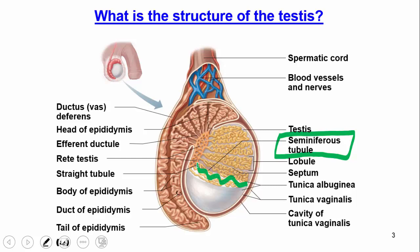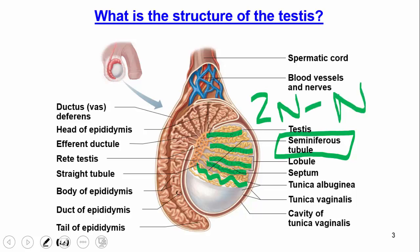The seminiferous tubules within the testes are where meiosis occurs. Remember — meiosis takes a cell from 2N to N. When 2N, the cell has two of each numbered chromosome: for example, chromosome one from the mother and one from the father. When it transitions to N, there is one chromosome from either the mother or the father — one number one, one number two, one number three, and so on.